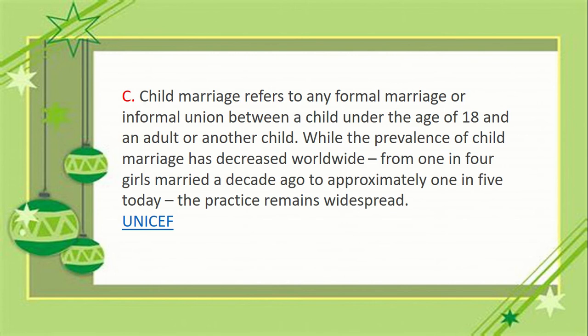Next is the resistance of child marriage. Child marriage refers to any formal marriage or informal union between a child under the age of 18 and an adult or another child. For marriage, the age of the female person must be 18 and male 21. While the prevalence of child marriage has decreased worldwide from one in four girls a decade ago to approximately one in five today, it remains widespread according to UNICEF. These non-government organizations also play a significant role in encouraging people to resist child marriage. If we can resist child marriage, we can control the population of our country.